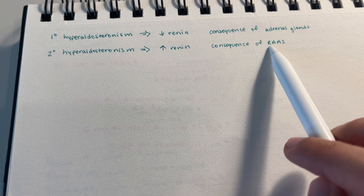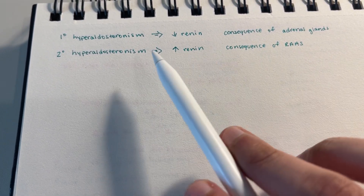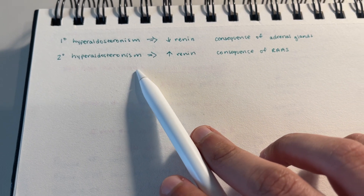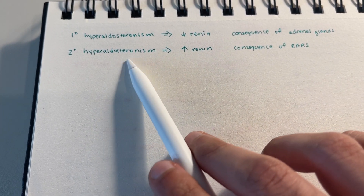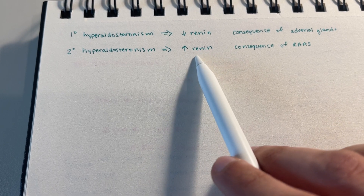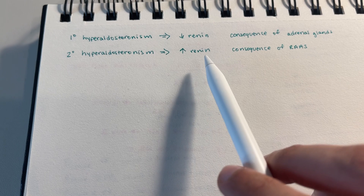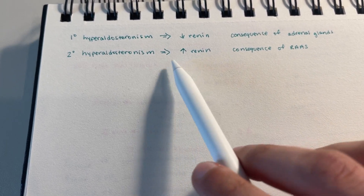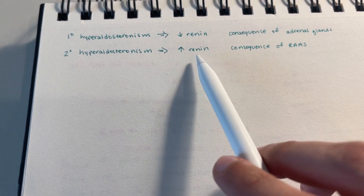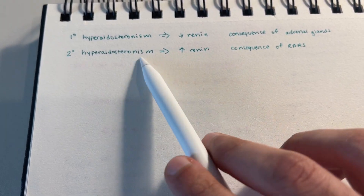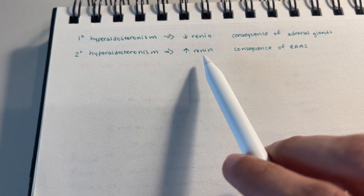There's way too much renin being secreted, and the consequence of that is hyperaldosteronism. So even though you're going to have a lot of aldosterone that will try to inhibit the renin through negative feedback, the problem is there's some issue with renin secretion where even if you keep inhibiting it, there's going to be a whole bunch of renin production. It doesn't really matter what the aldosterone does because the renin is just being overproduced.